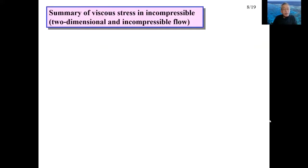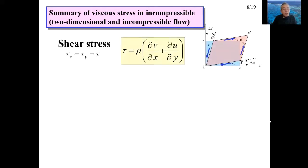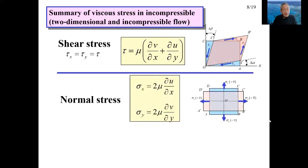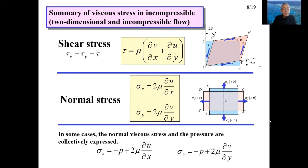This is the summary of viscous stresses. First, shear stress. Second, normal stress. In some cases, the symbol delta sigma x is used for the sum of the normal viscous stress and pressure.